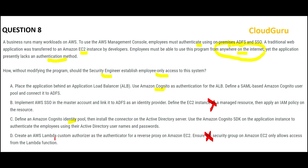Options B and D are struck out. From a security standpoint, nobody uses Lambda for authorizers — that is purely wrong. Option B is saying to implement SSO in the master account and then link this across — this will not work for the 'anywhere on the internet' requirement, so that's why it is wrong.